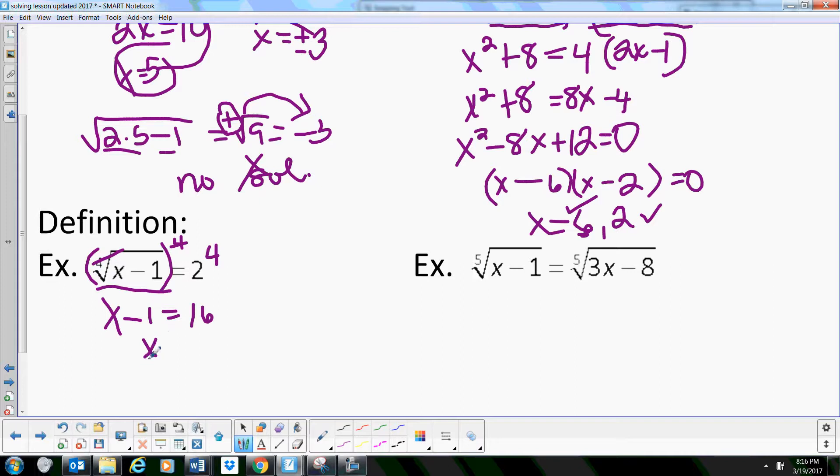So x is equal to 17. So let's check it by plugging it back in. And the fourth root, 17 minus 1 is the fourth root of 16, and the fourth root of 16 is indeed 2, so that 17 checks out as a good answer.